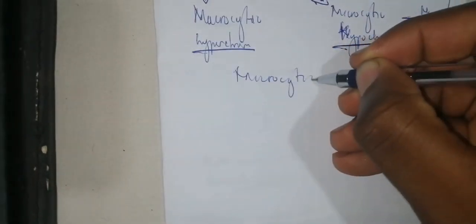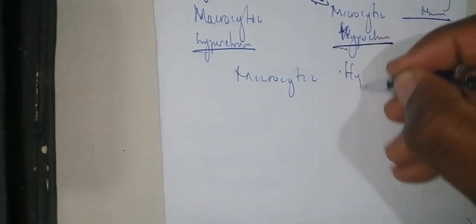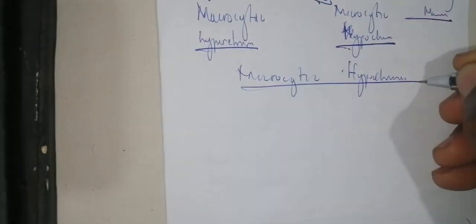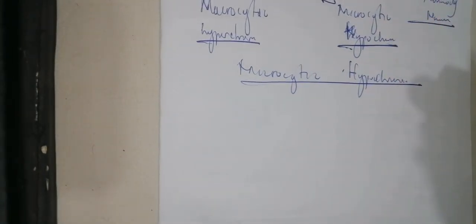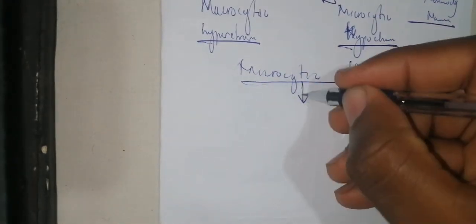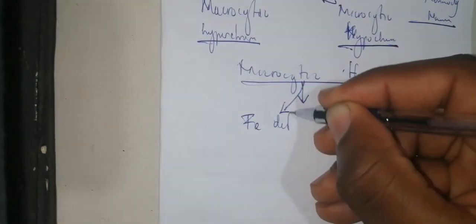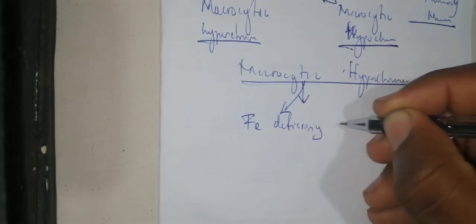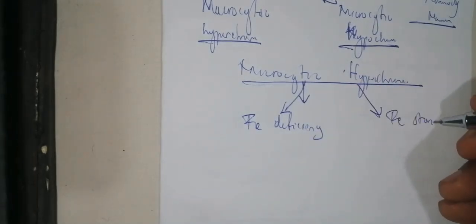Let's start with microcytic hypochromic anemia. For microcytic hypochromic anemias, you need to know that this type of anemia is generally associated with either iron deficiency or iron storage disorders. Those are the two major pathologies associated with microcytic hypochromic anemia.